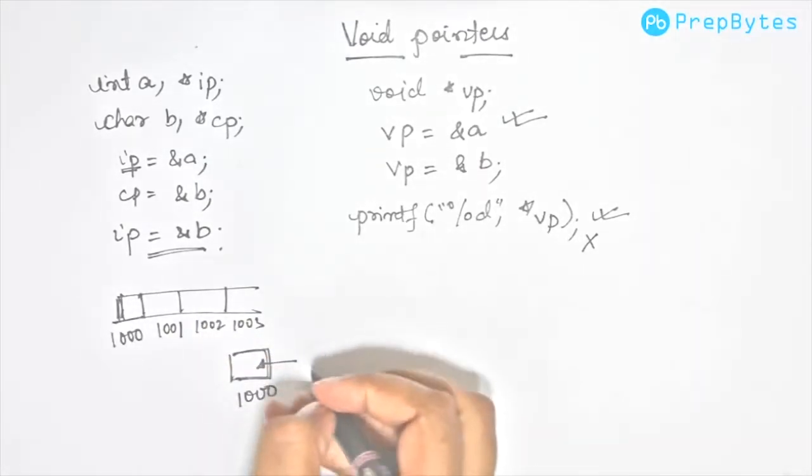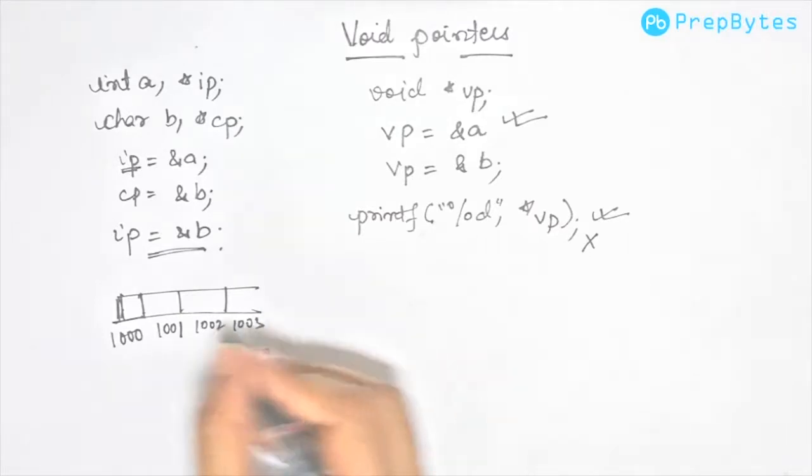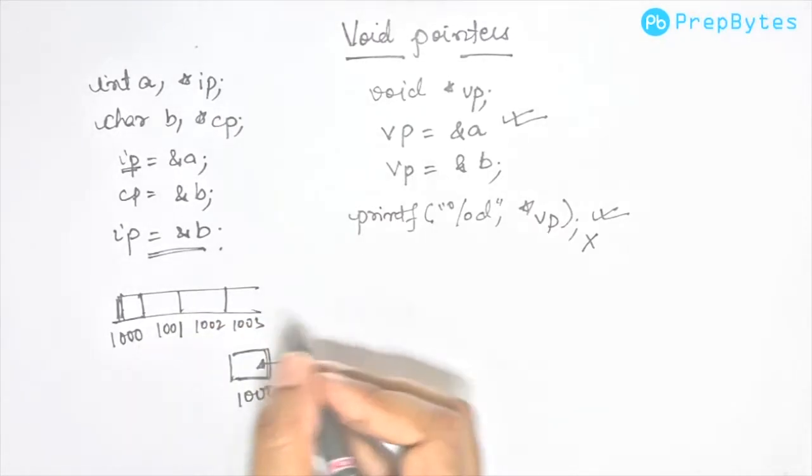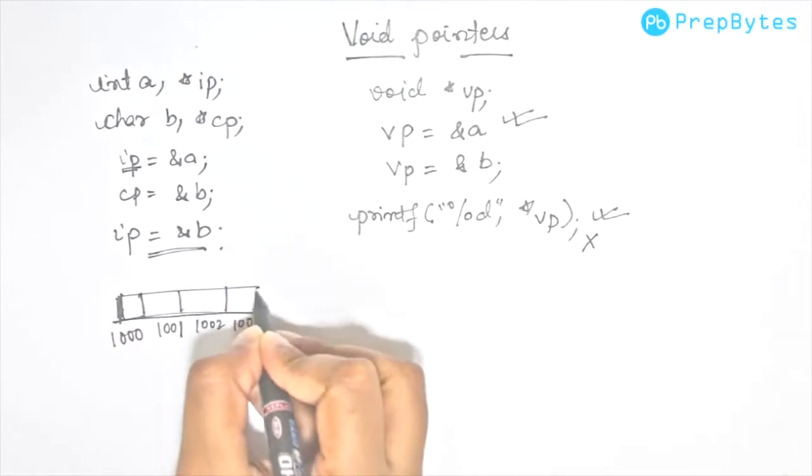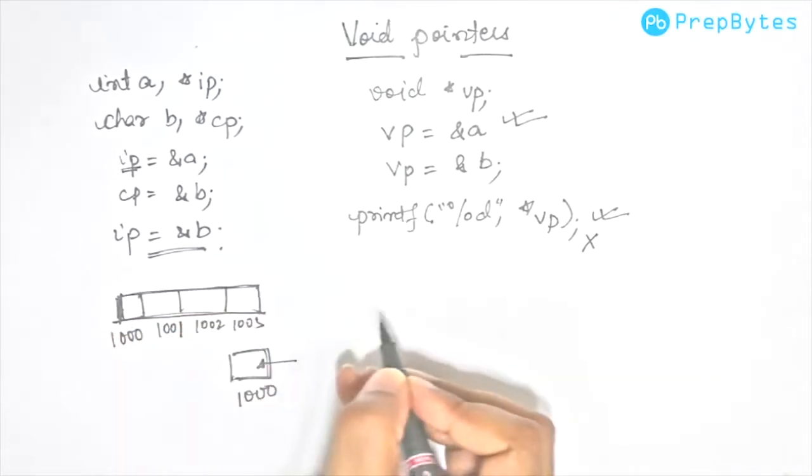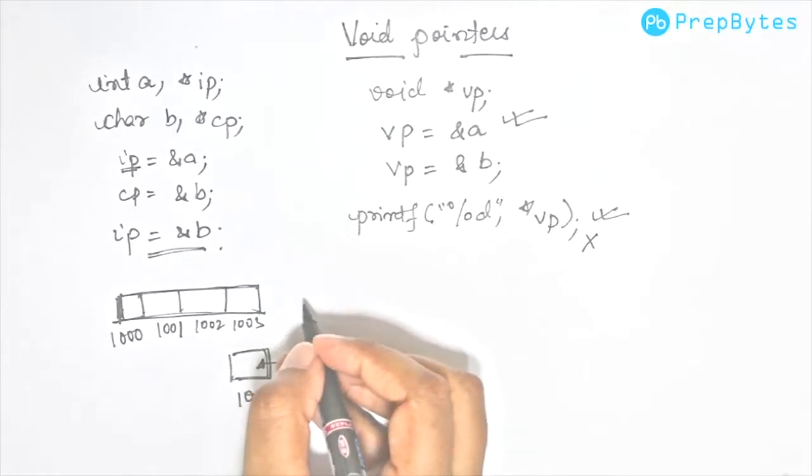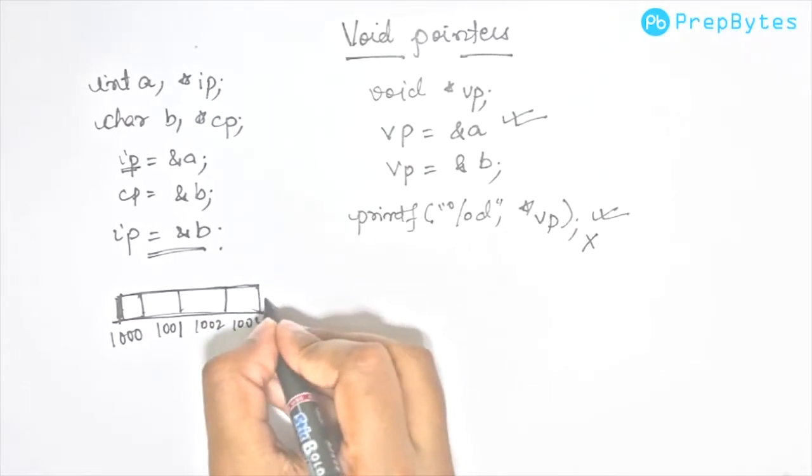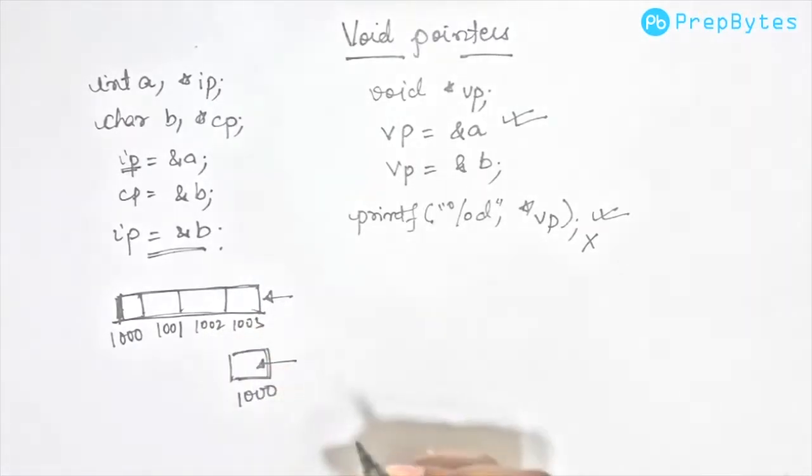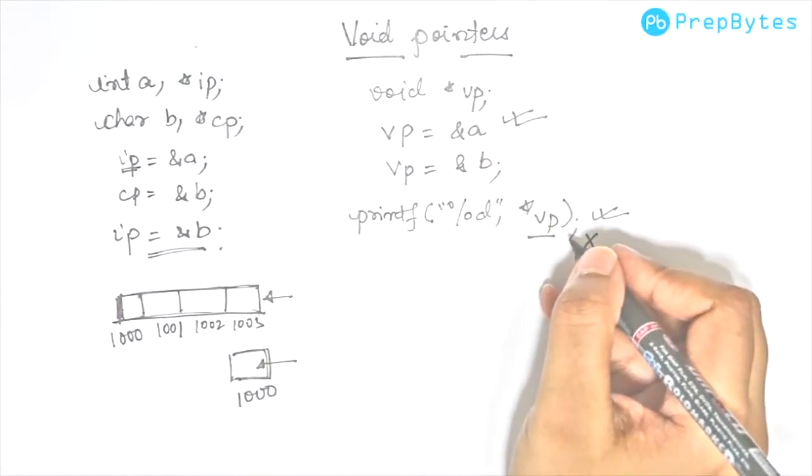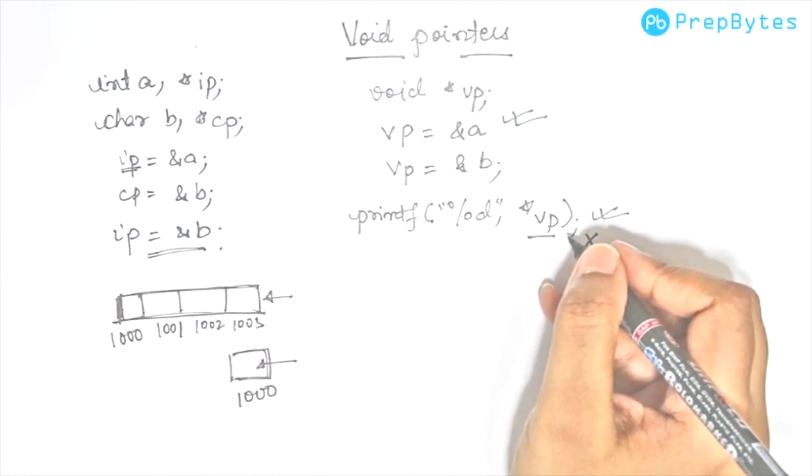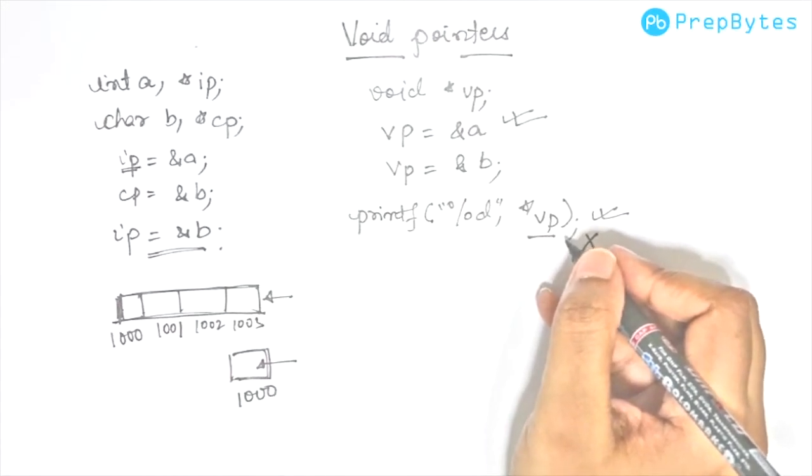In case of an integer, if it knows this is an integer, it will start looking for the value from here and go till 1003. It knows this is an integer data type and has to look for 4 bytes. But in case of a void pointer, the compiler has no clue what size it should look for to get the data.